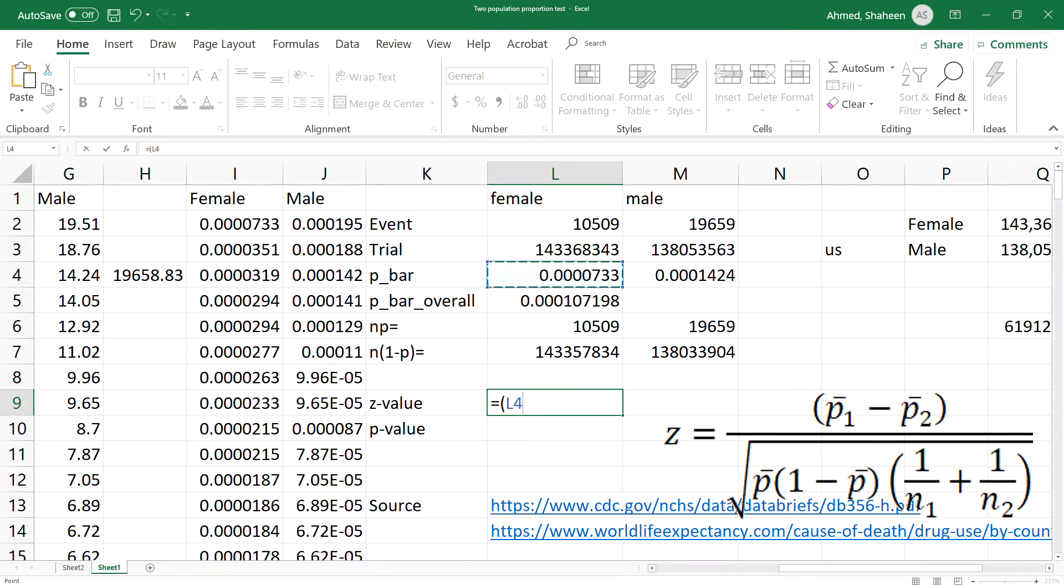That's the p-bar for female minus the male population, divided by the square root. I'm going to be using a bunch of parentheses. The overall rate times one minus the overall rate, close the parentheses, times, start another parentheses, one divided by this, plus one divided by this, close the parentheses.